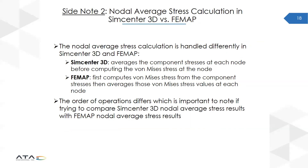Lastly, the nodal average stress calculation is handled slightly differently in Simcenter 3D and FEMAP. In Simcenter 3D, it first averages the component stresses at each node before computing the von Mises stress at the node. Whereas with FEMAP, it first computes the von Mises stress from the component stresses and then averages those von Mises stress values at each node. So the order of operations differs, which is important if you're ever comparing Simcenter 3D nodal average stress results with FEMAP nodal average stress results.